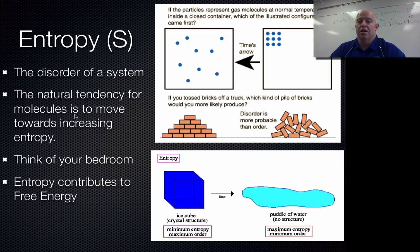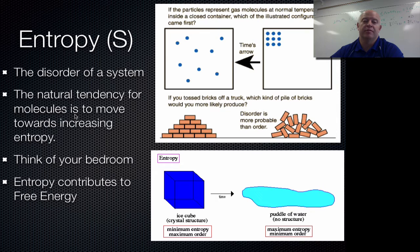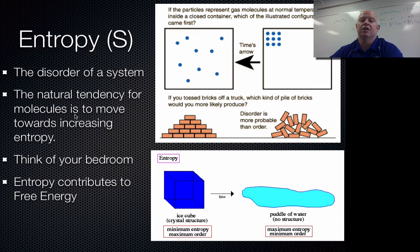Our bodies are another example — we are constantly fighting entropy. As you get older, your body is less and less capable of fighting off entropy and maintaining good cell structure and organization. Sooner or later things break down: we get sick, cancers develop, we don't heal as fast, our skin doesn't regenerate as quickly — all because we can't fight entropy as effectively.